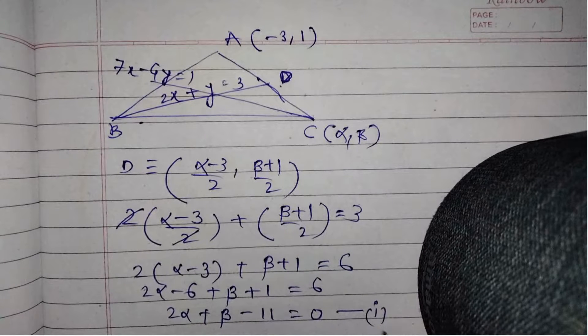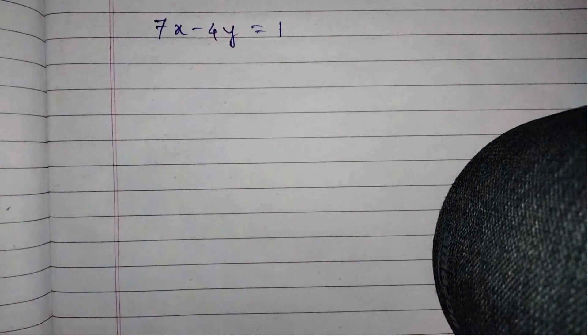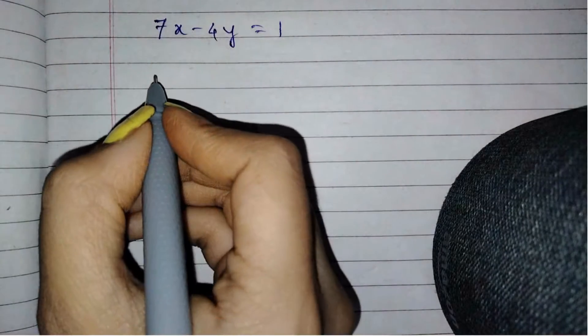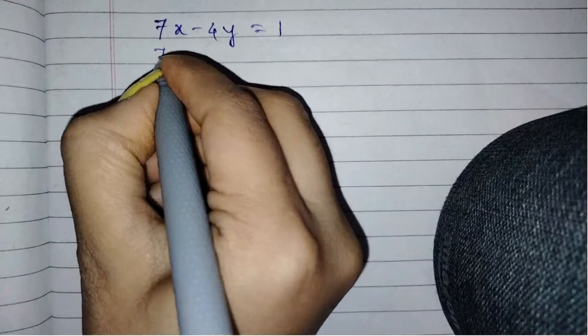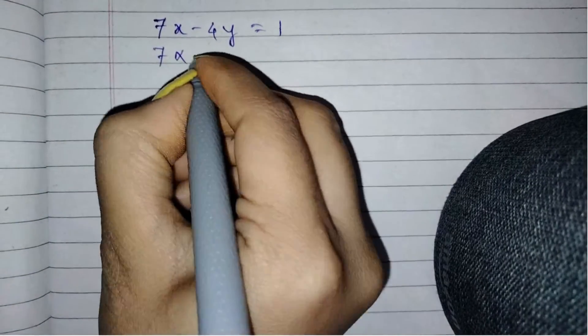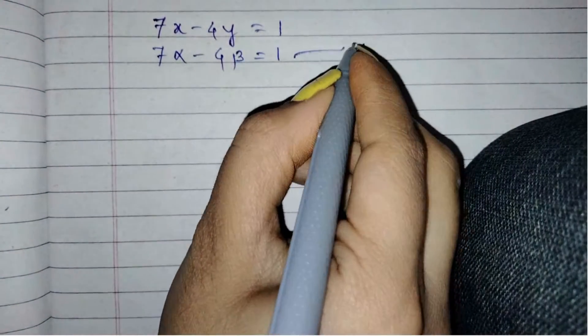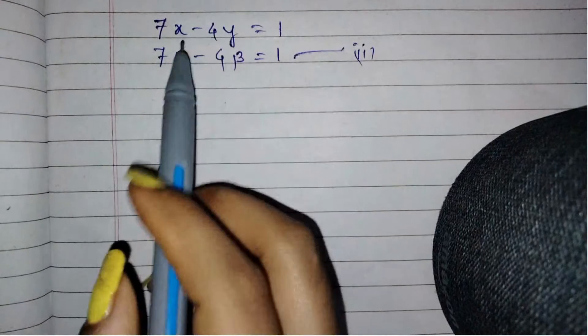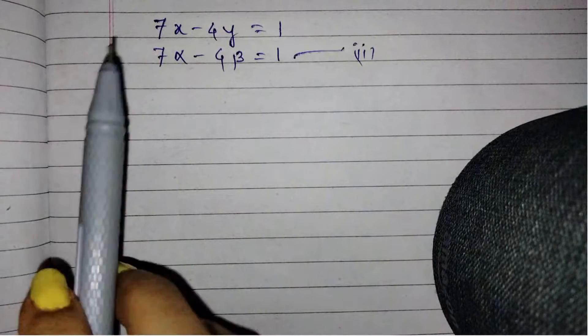Now we know the equation of the angle bisector: 7x - 4y = 1. Point C passes through the angle bisector equation. So we can substitute α and β: 7α - 4β = 1. This is the second equation. Now let us solve the two equations to get α and β.